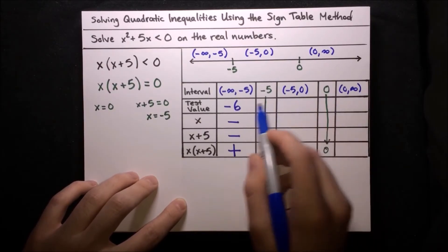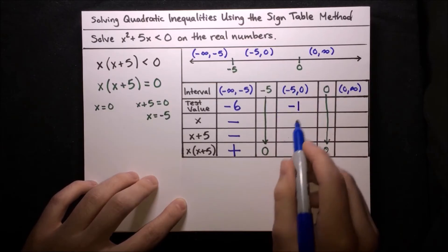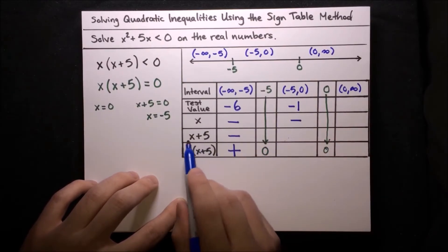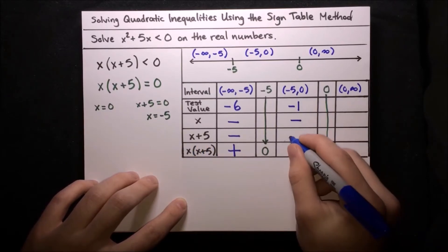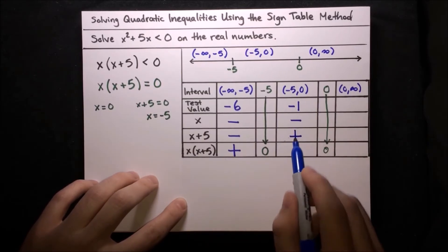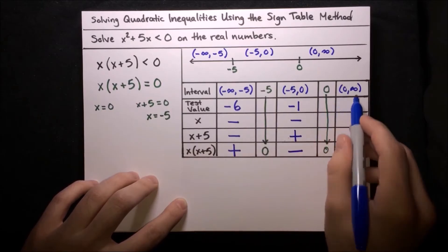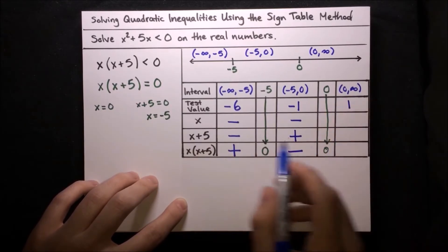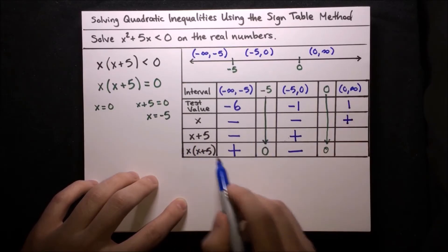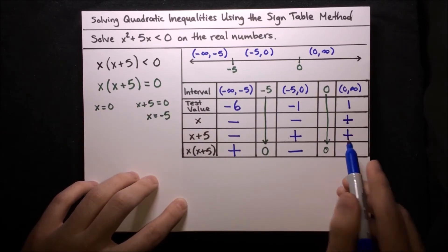For the last interval, 0 to infinity, our test value is 1. The factor x when x is 1 is positive, and x plus 5 when x is 1 gives 1 plus 5 equals 6, which is also positive. So the function is a positive times a positive, which is positive on that interval. Now that we have the sign of the function on each of these intervals, let's look back and see what we need to solve this inequality. To solve it, we need where this function is less than 0, so where it's negative.